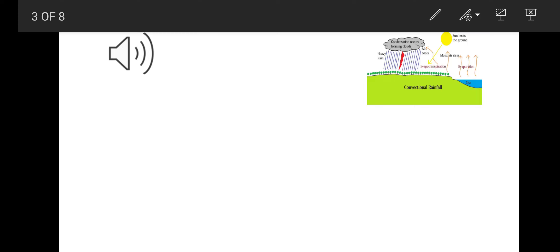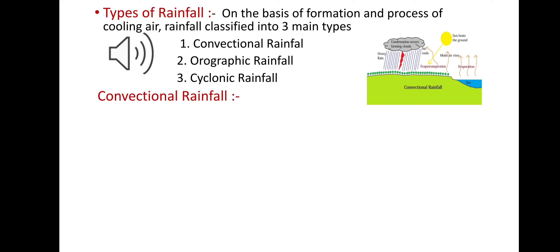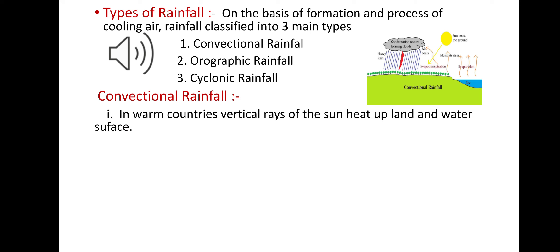Classifications of rainfall: on the basis of formations and the process of cooling air, rainfall is classified into three main categories — number one, convectional rainfall; number two, orographic rainfall; number three, cyclonic rainfall.